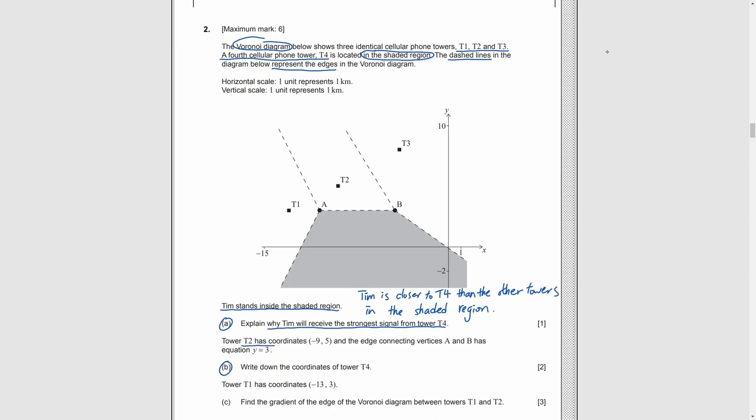Part B. Now we know T2's coordinates, which are negative 9 and 5, and the edge AB is y equals 3. We need to find T4. For any point on edge AB, the distance to T2 should be the same as that to T4. As the edge line y equals 3 is a horizontal line, the line connecting T2 and T4 should be a vertical line. So the x-coordinate of T2 and T4 should be the same, negative 9. The distance between T2 and the edge is 5 minus 3, which is 2. So the y-coordinate of T4 is 3 minus 2, which is 1.